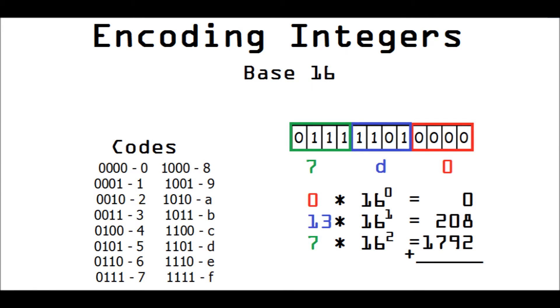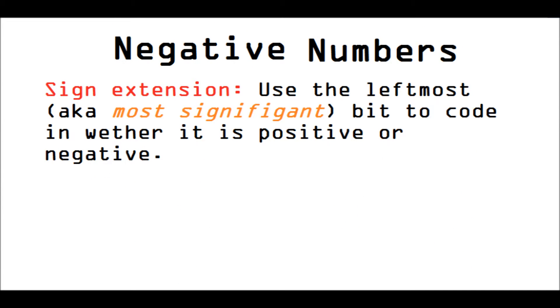And so, you add these things together and you get the result, which is 2000 in base 10. Now, to code in whether a number is negative or not, you may have to sign extend the binary number.